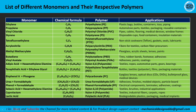Polyethylene is used in plastic bags, bottles, containers, toys, and piping. Polypropylene is used in automotive parts, textiles, packaging, and reusable containers. Polyvinyl chloride — generally called PVC — is used in pipes, cables, flooring, and medical devices. We will cover all types of materials and their properties in the upcoming videos.